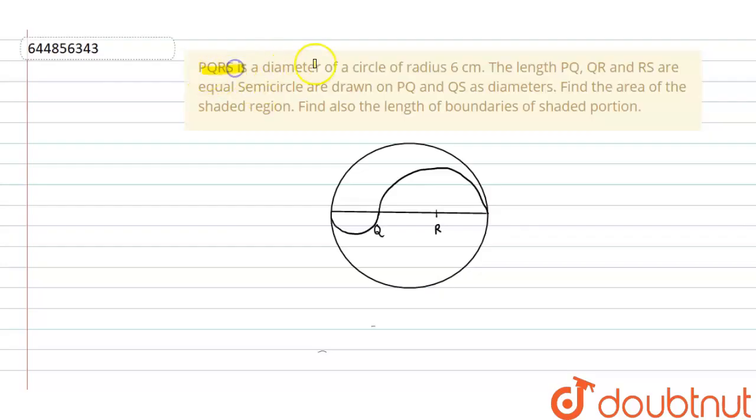PQRS is a diameter of a circle whose radius is 6 cm. The length PQ, QR and RS are equal. Semi-circles are drawn on PQ and QS as diameters. Find the area of the shaded region. Also find the length of boundaries of shaded portion.